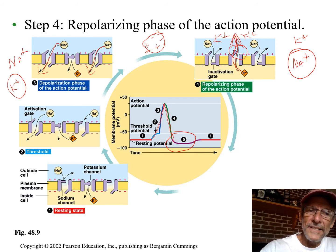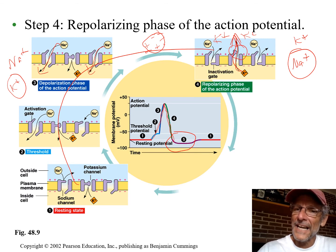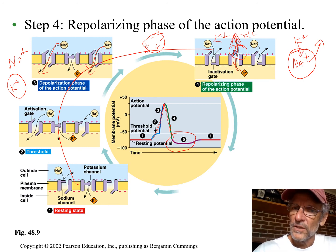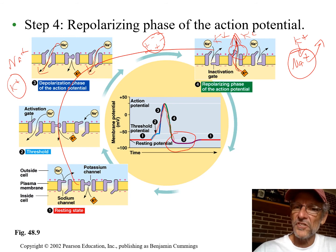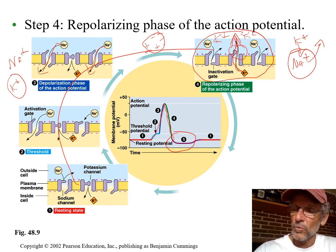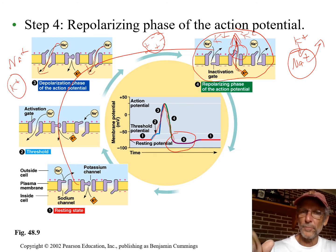While all this happened — the action potential — the cell can't fire again until we shoot the sodiums back out and the potassiums back in. That's where the sodium-potassium pump, which has been working all this time, comes into play. This is where the cell gets reset, so that all this can happen again in this local area.